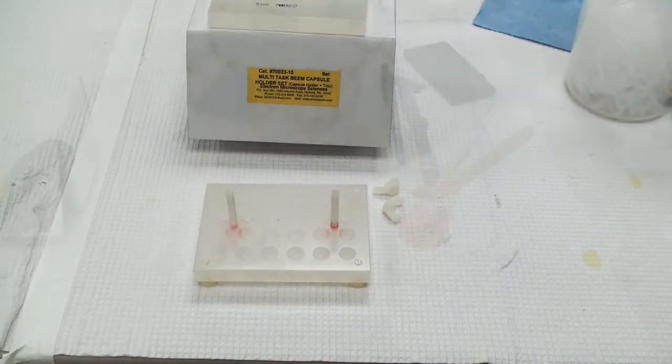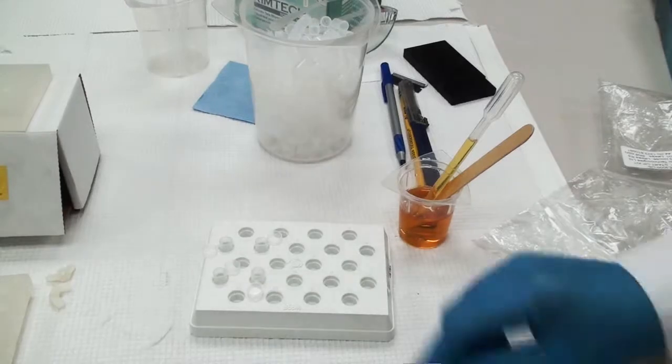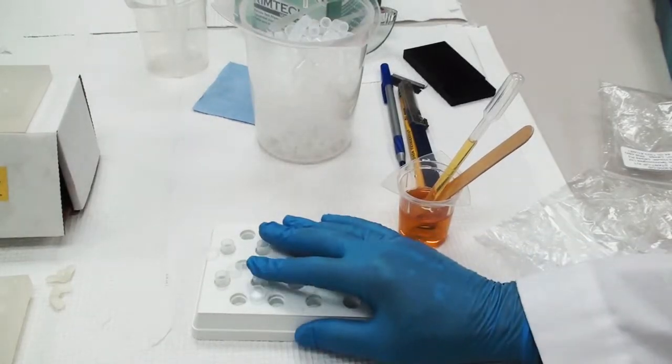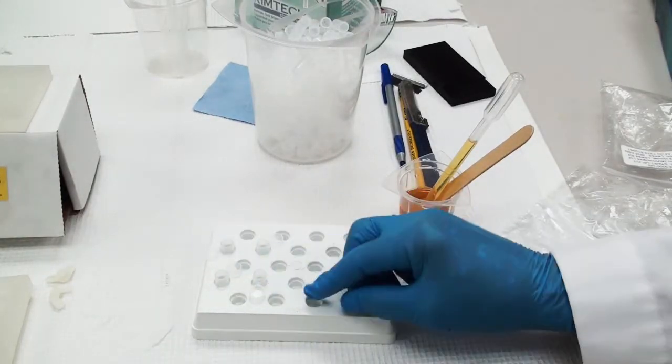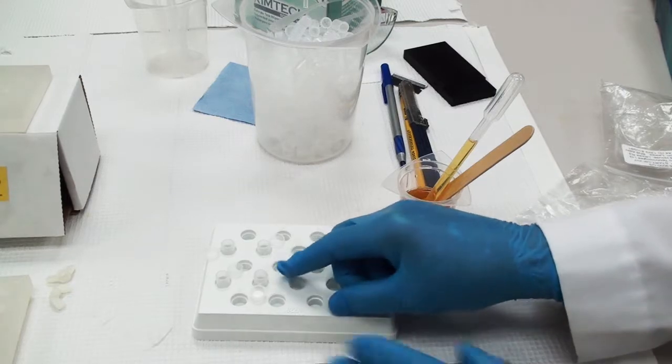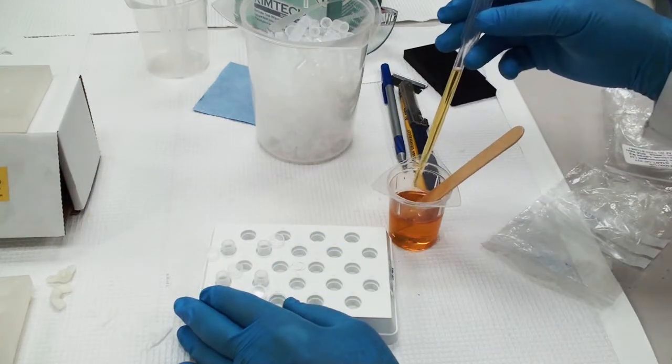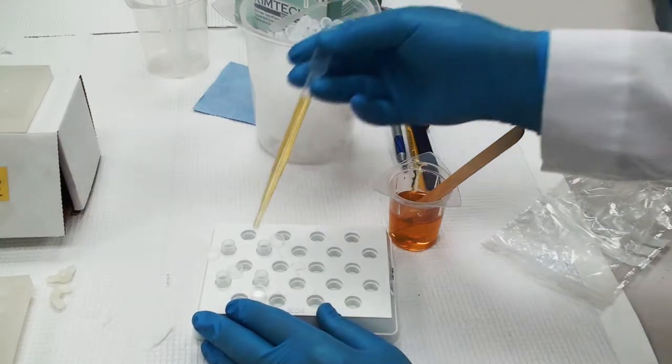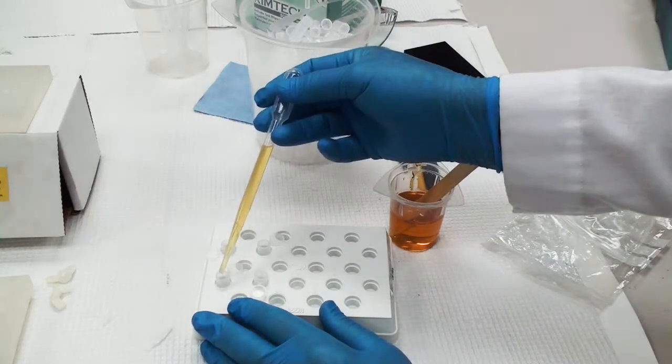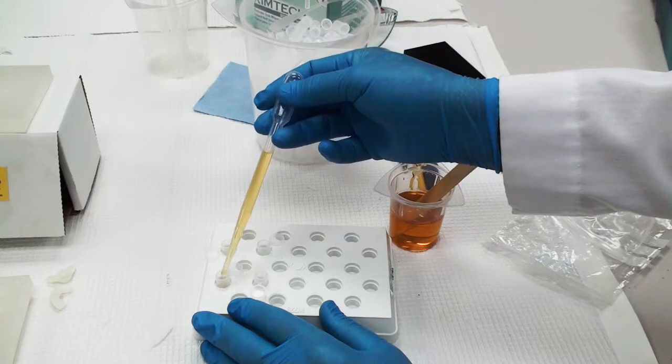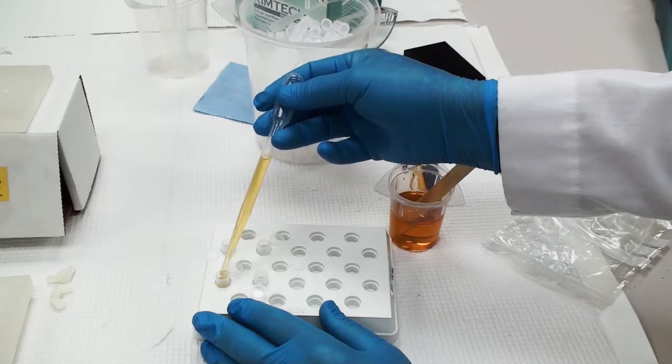I like to start with my beam capsules in the regular holder so I don't get any resin on the insertion of the multi-task. When I fill these up, I want to be sure, like normal, we don't get bubbles in there, typical for even oven polymerization.